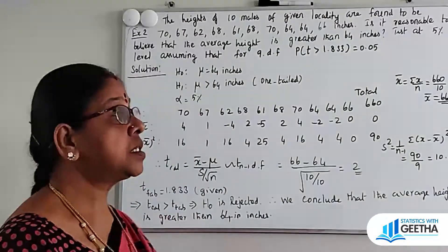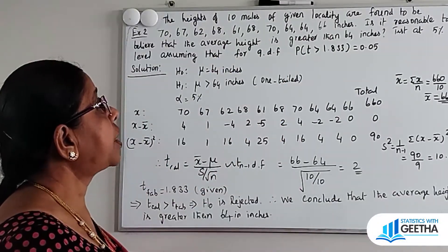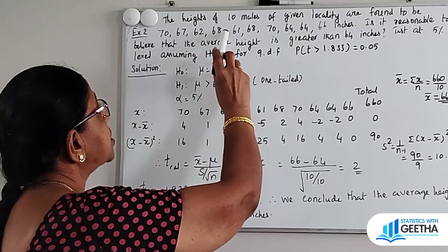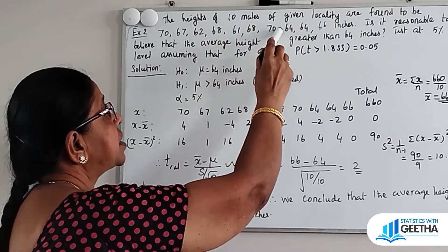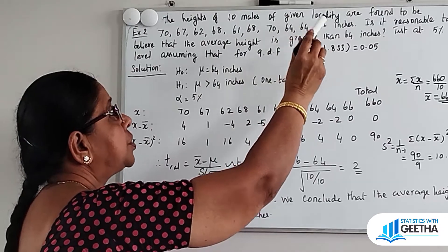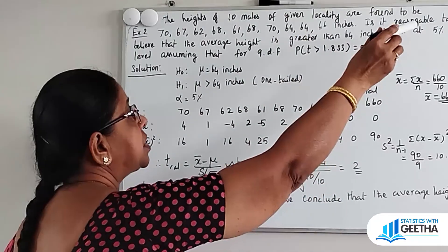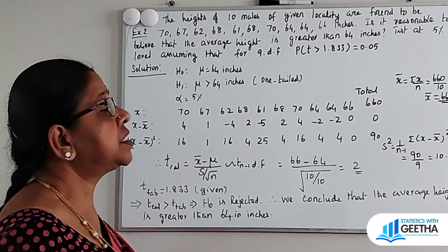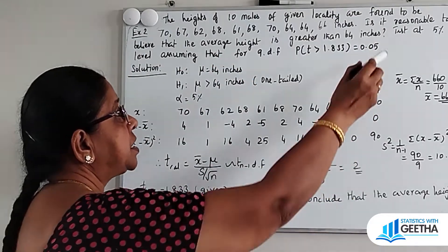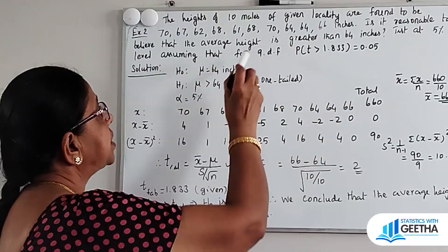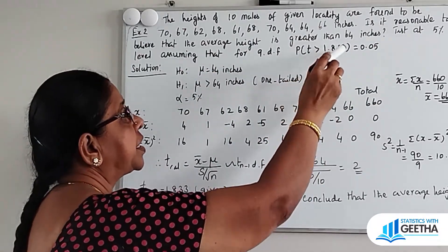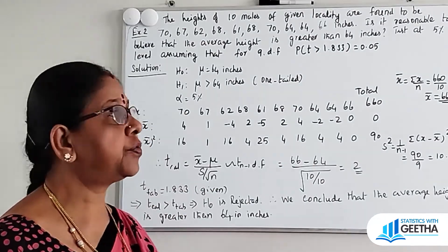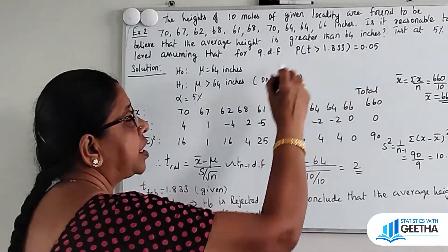Example 2: The heights of 10 males of a given locality are found to be 70, 67, 62, 68, 61, 68, 70, 64, 64, 66 inches. Is it reasonable to believe that the average height is greater than 64 inches? Test at 5% level, assuming that for 9 degrees of freedom, probability of T greater than 1.833 is equal to 0.05.